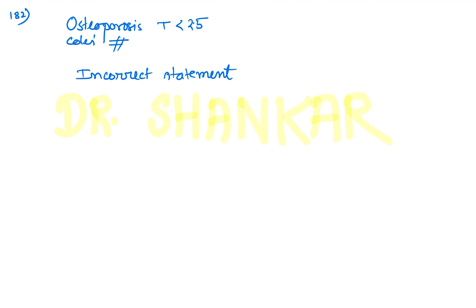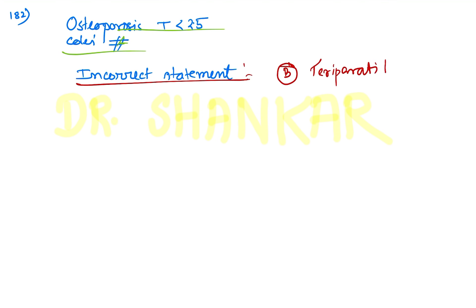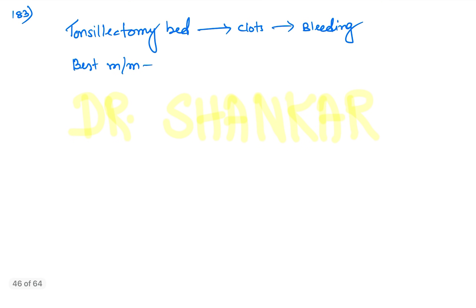Question number 182: an osteoporotic female with a T-score less than -2.5 had a Colles fracture. The question asks for the incorrect statement about management. The incorrect option is option B — teriparatide given before bisphosphonate. This is the wrong option.